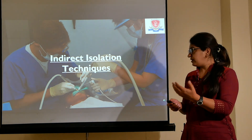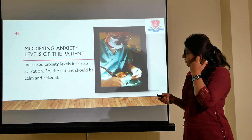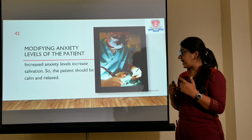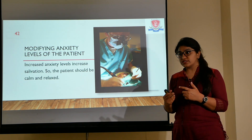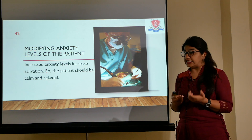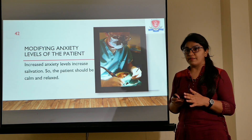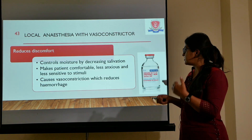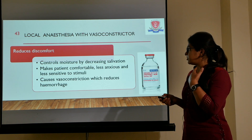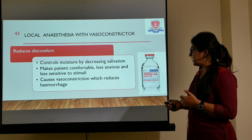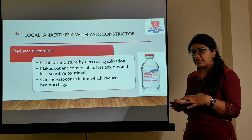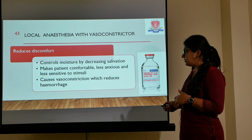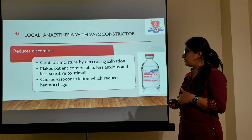Coming to the indirect techniques — first is modifying the anxiety level. It is very important that the patient should be relaxed and non-anxious, because an anxious patient may have more salivation, leading to interference in the procedure. The patient needs to be calm and relaxed — this can be done just by talking or sometimes drugs are required. Local anesthesia with vasoconstrictors decreases salivation, makes the patient comfortable and less anxious because pain sensation is reduced, and also helps in reducing hemorrhage and controlling bleeding.